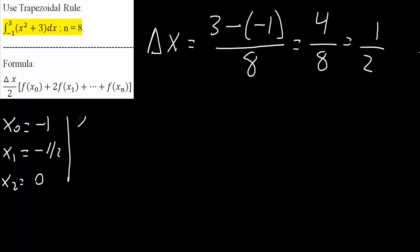And our x3 would be 1 half, and our x4 would be 1, and our x5 would be 3 halves. We're doing this until we get 3, and x6 would be 2, x7 would be 2.5, or 5 over 2. Finally, x8 would be 3.